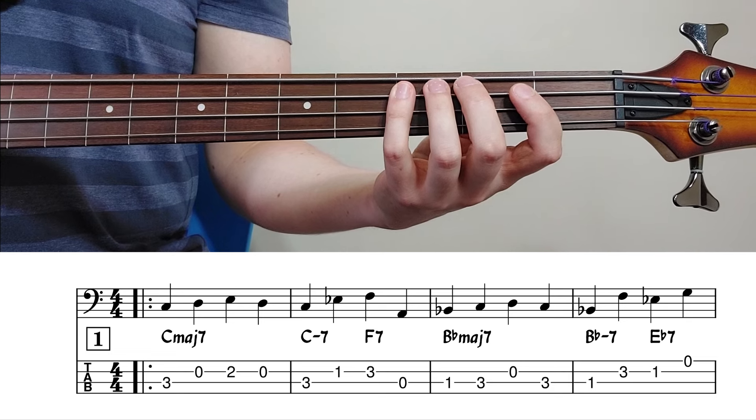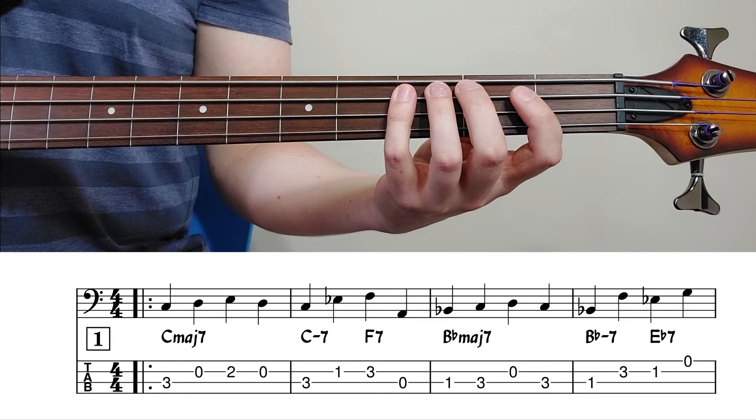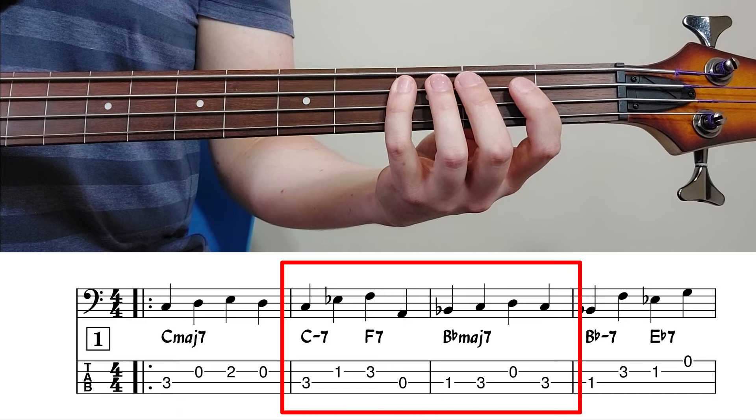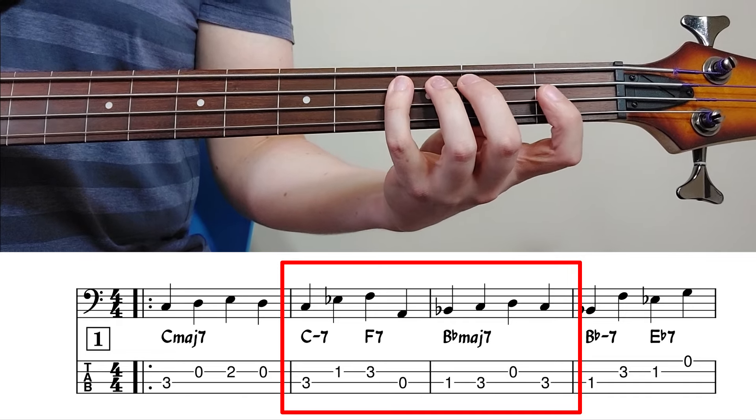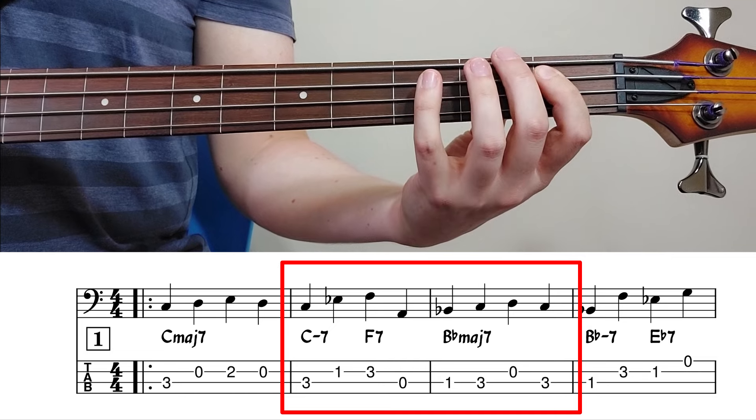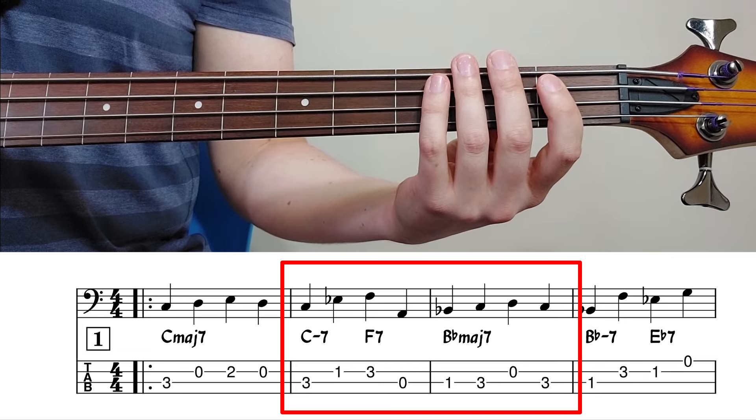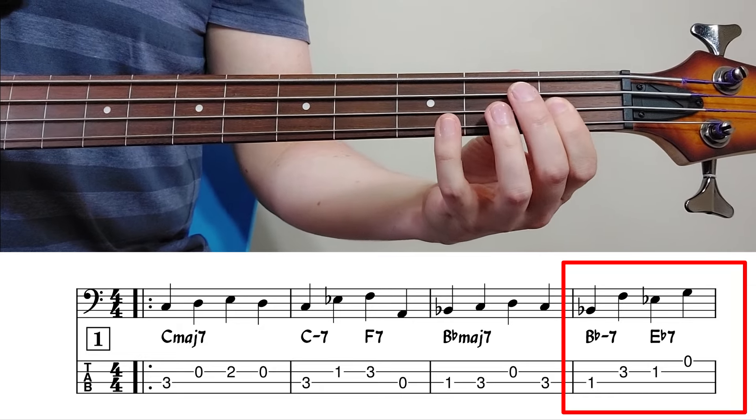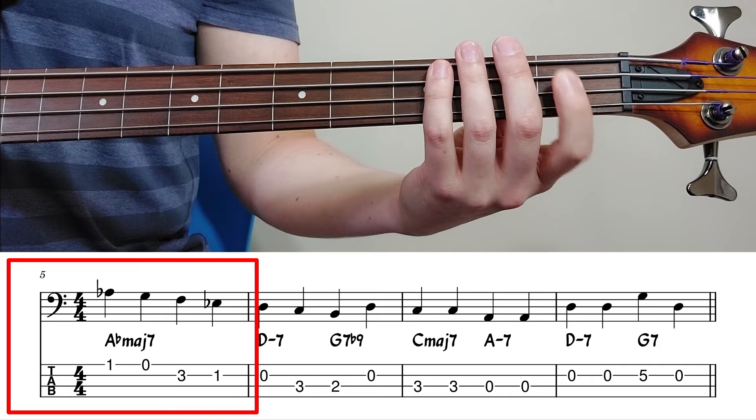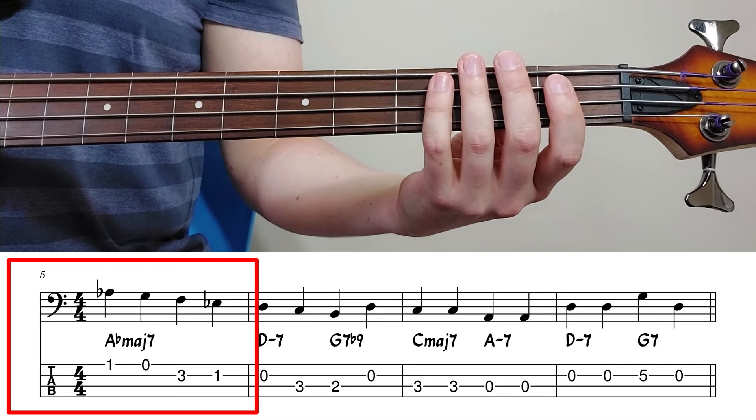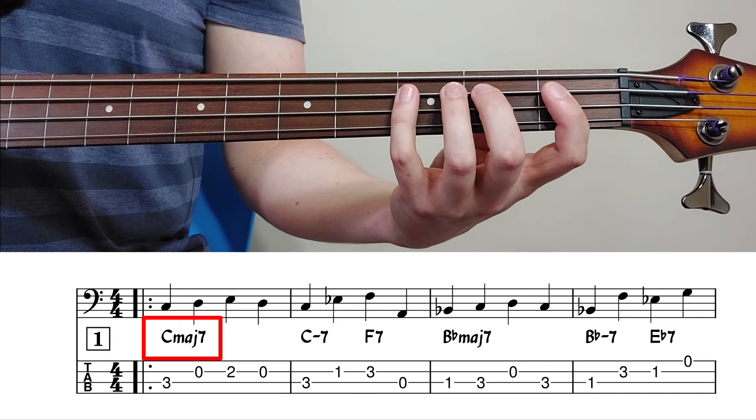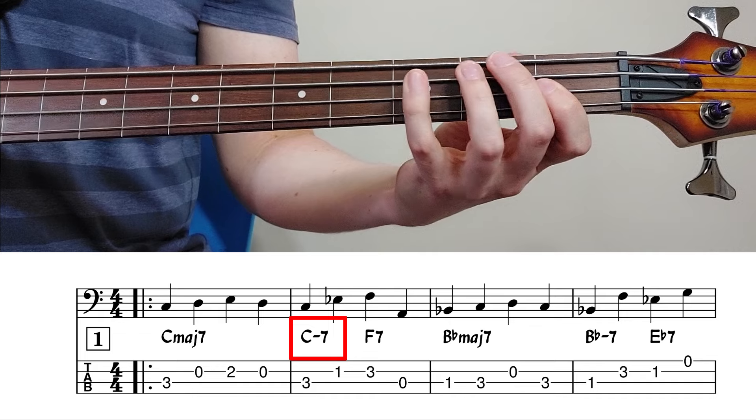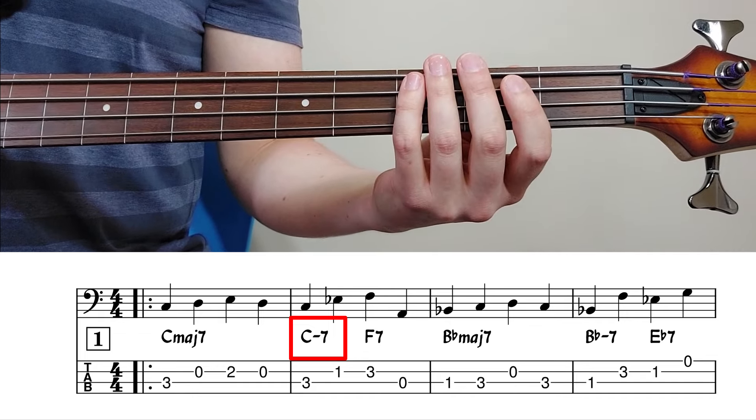The A sections are full of 2-5-1 chord progressions that cycle through three key centers. We start in the key of C with C major 7, then move immediately into our first 2-5-1 in the key of B flat major with C minor 7, F7, B flat major 7. One bar of B flat major 7, and then into our next 2-5-1 in A flat. B flat minor 7, E flat 7, A flat major 7. Notice the pattern that these 2-5-1s take. The 1 chord in each 2-5-1 switches from major 7 to minor 7, and becomes the new 2 chord in the next 2-5-1.